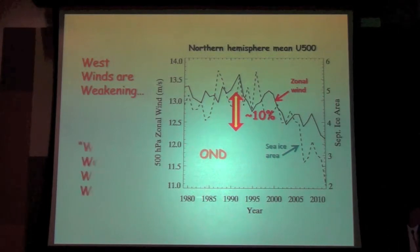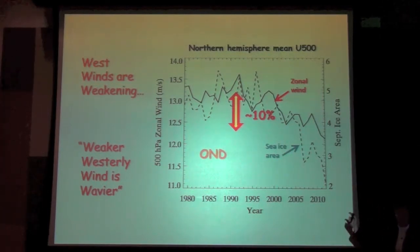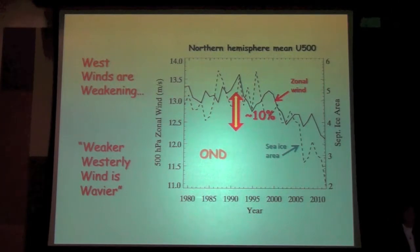Something that meteorologists know is that when we have a weaker jet stream, it tends to take a wavier path as it travels around the northern hemisphere. These waves are in the north-south direction. A handy way to remember that is that weaker westerly wind is wavier.